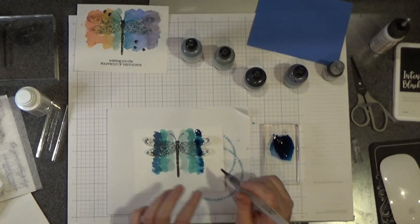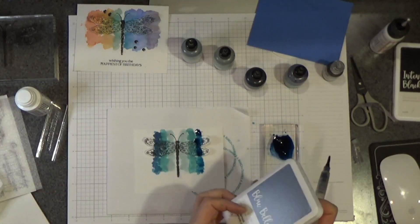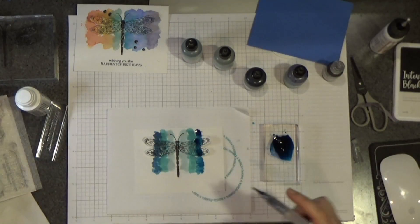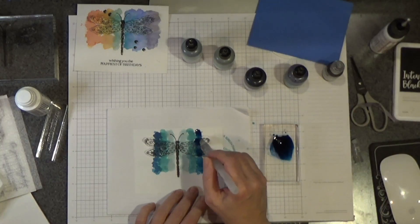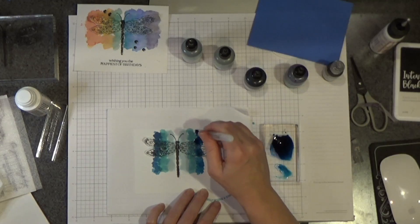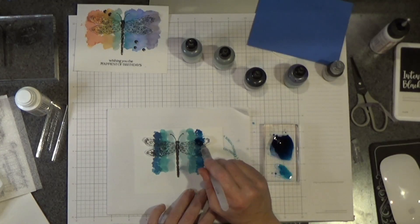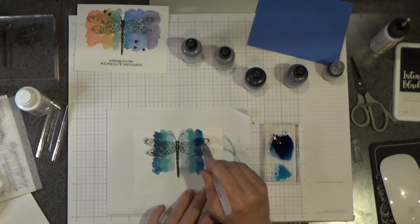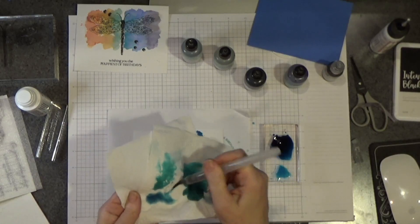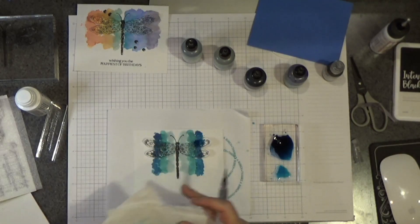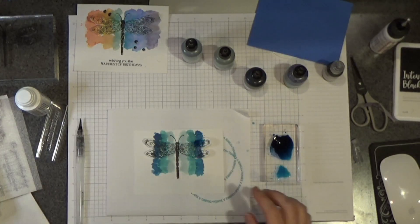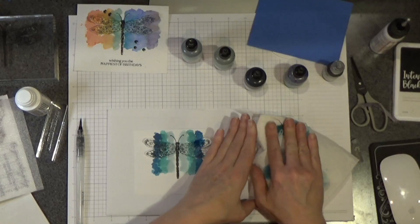If you don't have re-inkers, you can take your ink pad, open it up, smoosh a little ink on there and do the same thing. So you don't have to have re-inkers to do this technique. I'm pulling a little bit of the ink off. It looks a little dark to me. So that was the peacock. And again, I'm just running some water through there to clean off my brush.